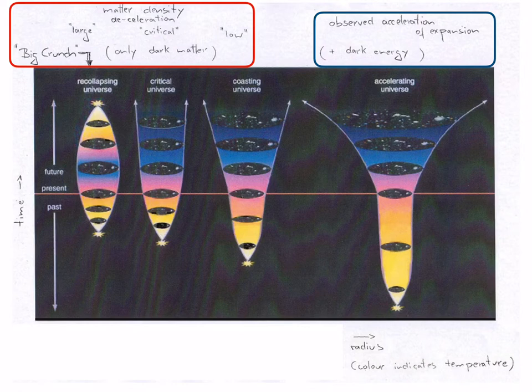An acceleration is only possible if a new type of matter exists. This is shown with the cartoon on the right, where the expansion of the universe accelerates. This would require the existence of a new type of matter, referred to as dark energy, which is anti-gravity or repulsive.